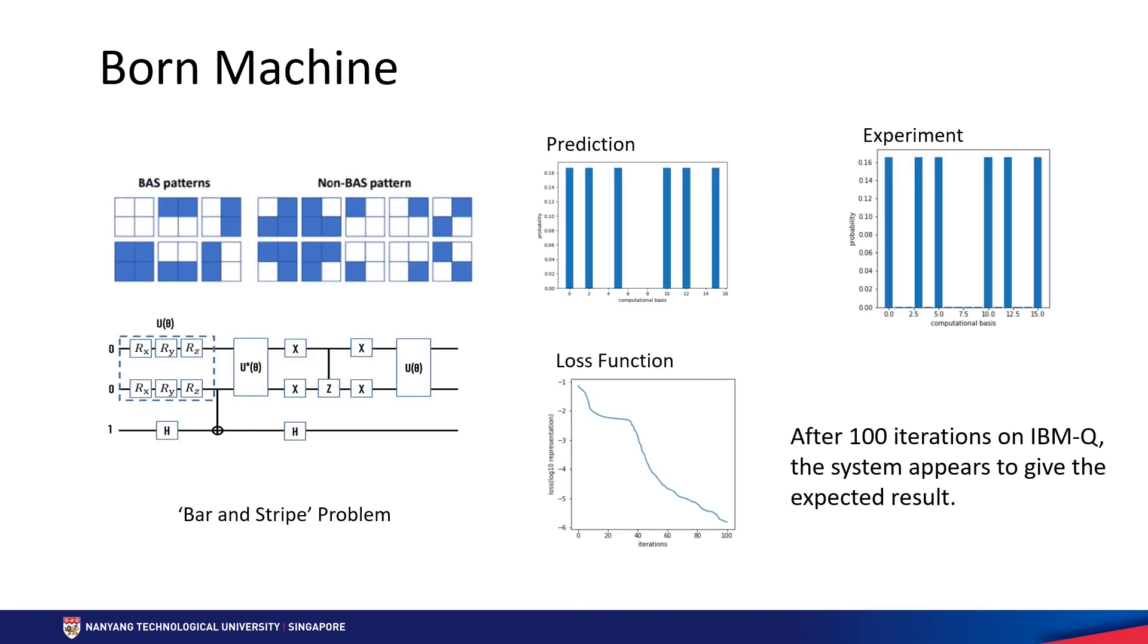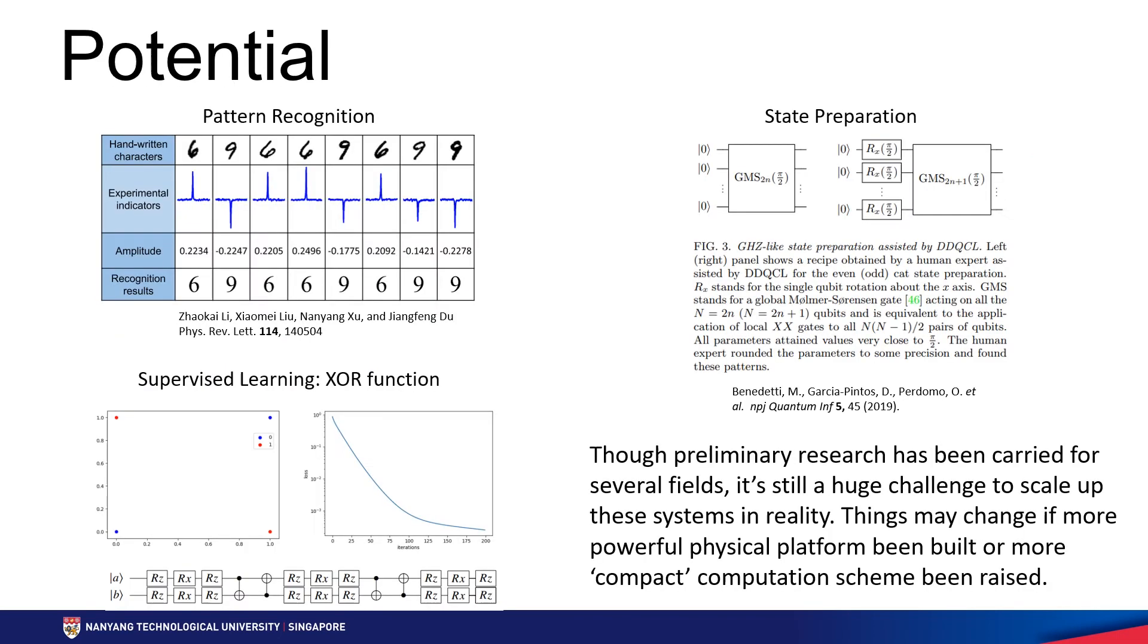We have run a testing project on IBM Q to check how it works with bar and stripe game, where we divide two by two patterns into two groups. The experiment shows that after 100 iterations the result looks well. Similar scheme can be developed to fit more tasks.